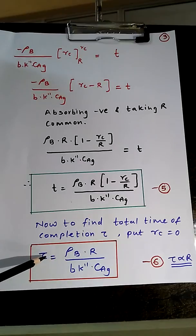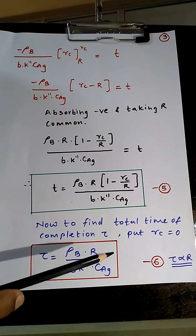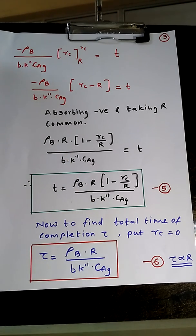So what we conclude from this: τ is directly proportional to R for this situation also where the chemical reaction is dominant resistance.